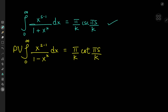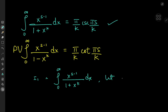We'll start off with this integral here. We're going to call it I sub 1. So I sub 1 is the integral from 0 to infinity of x to the s minus 1 divided by 1 plus x to the k, dx. It's a fairly simple proof. All we need is one substitution where we let x to the k equal u, which implies that x equals u to the 1 over k, and this further implies that dx equals...